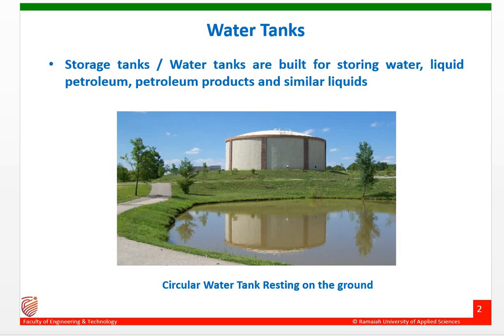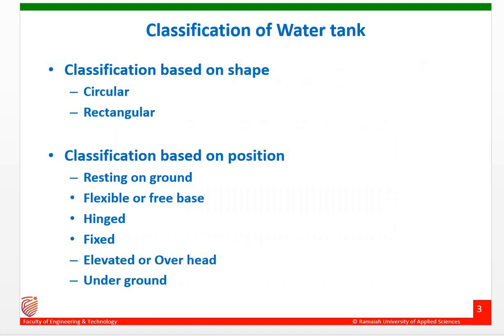Water tanks are storage tanks which are built for the storage of any kind of fluid like water, liquid, petroleum, and petroleum products or any similar liquids. We will look into the classification of the water tank, which can be made based on two different conditions: one is based on its shape, and the other is based on its position.